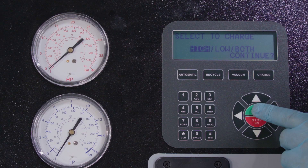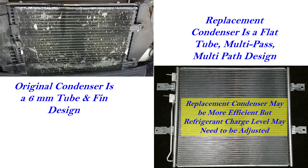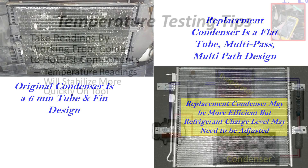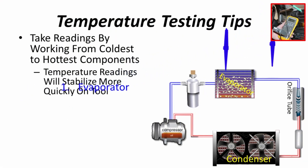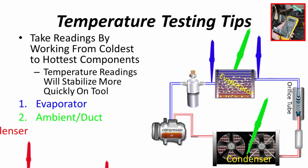Maintain your equipment. Check the charging scale calibration periodically and check the machine for leaks, especially the service couplings. Finally, if system components such as the condenser have a significantly different internal volume from the OE unit removed from the vehicle, it may be necessary to adjust the system charge level to optimize performance to match the new condenser. A differential temperature test, sometimes called a maximum heat load test, is the best way to fine-tune the charge level.